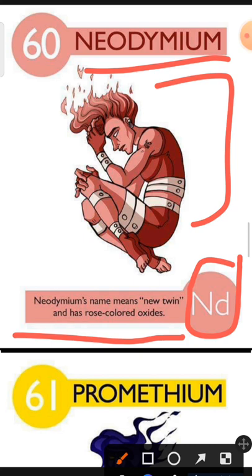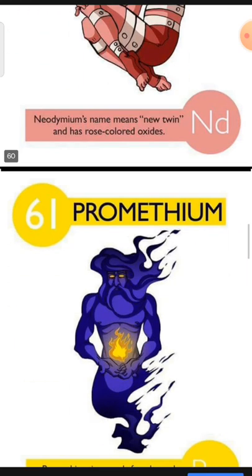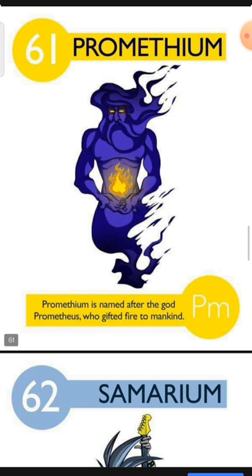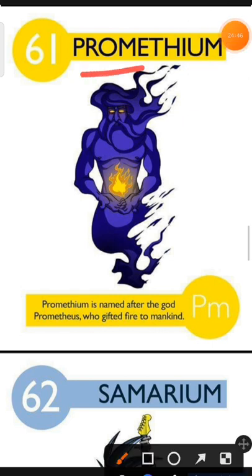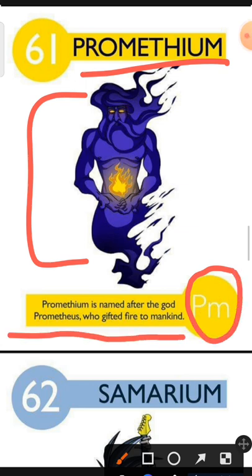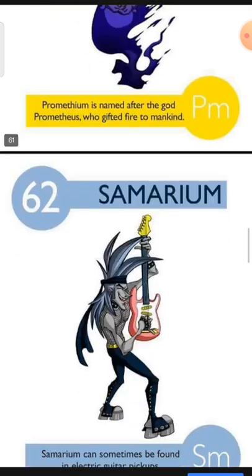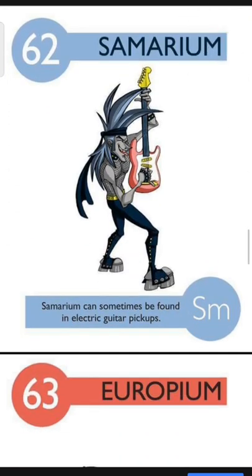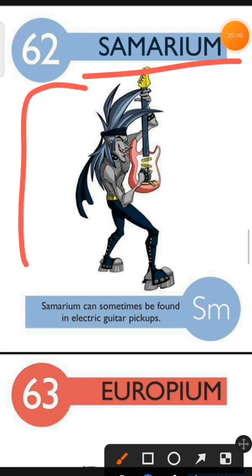Element number 61 is Promethium. The characteristic of Promethium is: Promethium is named after the god Prometheus who gifted fire to mankind. Element number 62 is Samarium. The characteristic of Samarium is: Samarium can sometimes be found in electric guitar pickups.